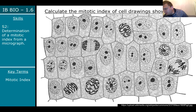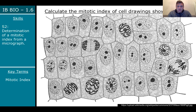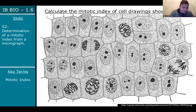I'm going to grab paper and pencil and do this with you. First, calculate the total. Counting row by row: one through ten in the first row, then continuing — eleven, twelve... thirty-one, thirty-two, thirty-three, thirty-four. I have a total of 34. That's my total number of cells, which goes in the denominator.